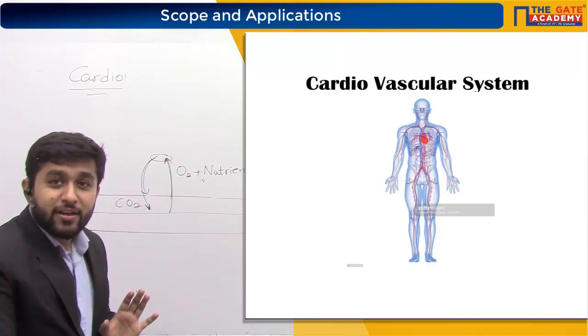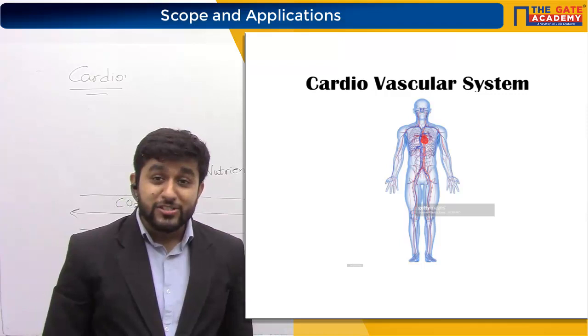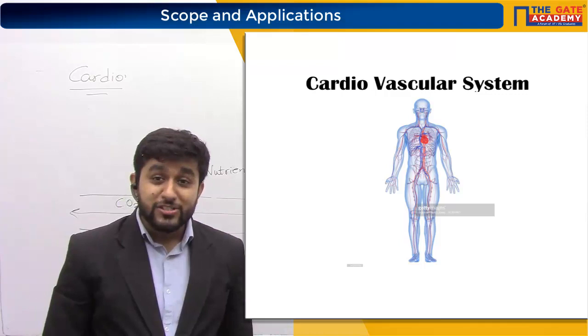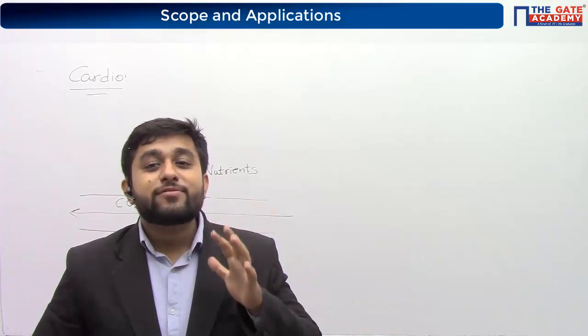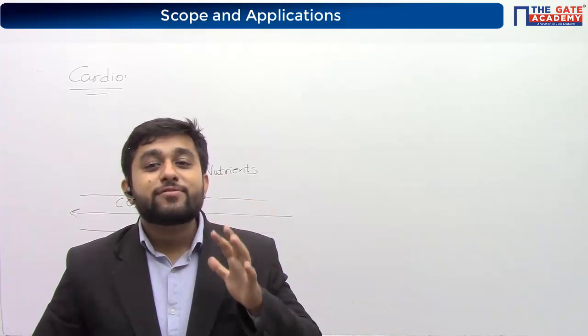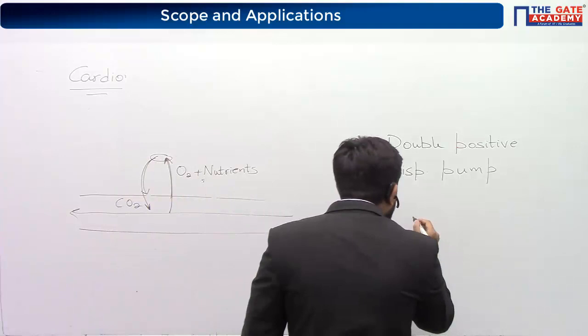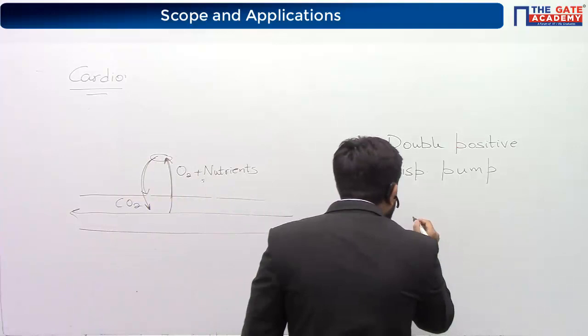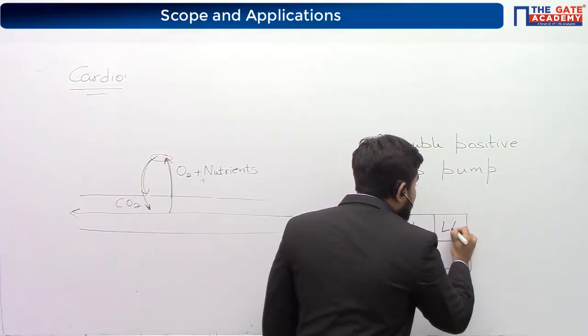We need circulation of blood so that cells receive nutrients and eject waste. Billions of cells require oxygen continuously, so there must be a very powerful pump to supply blood - that pump is your heart. Our heart is a double positive displacement pump.